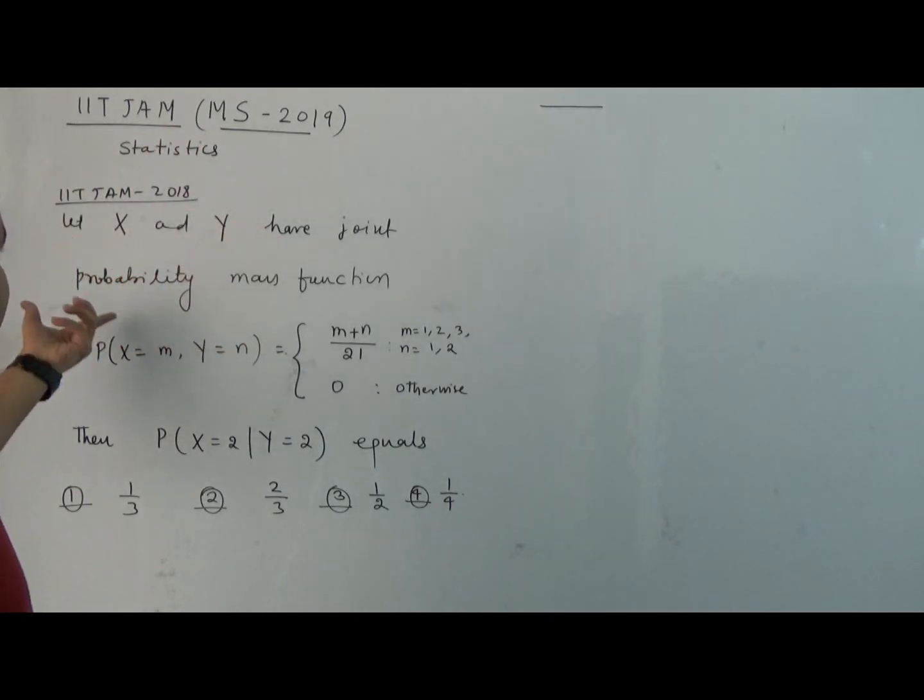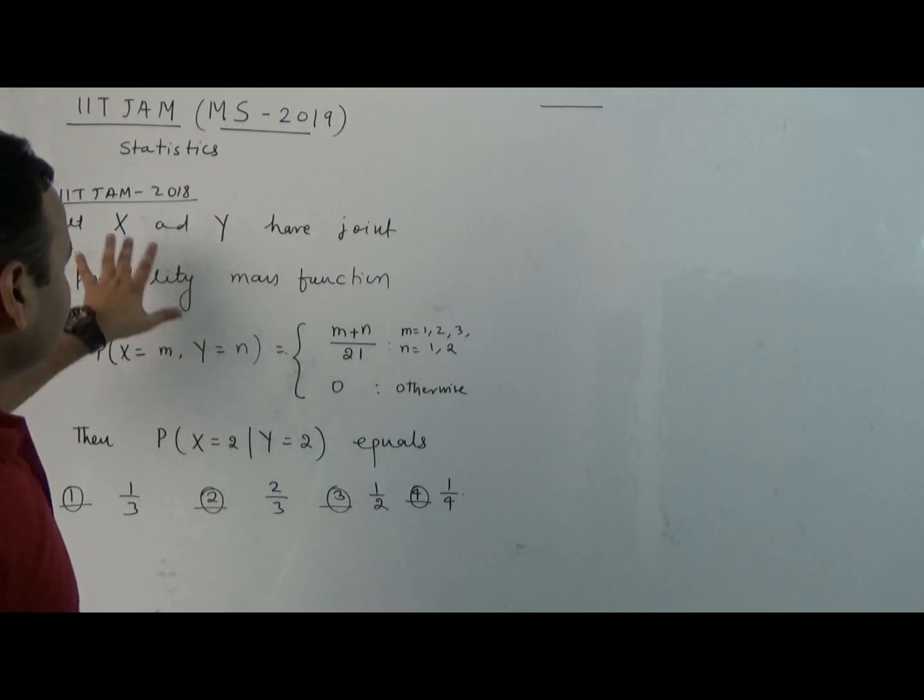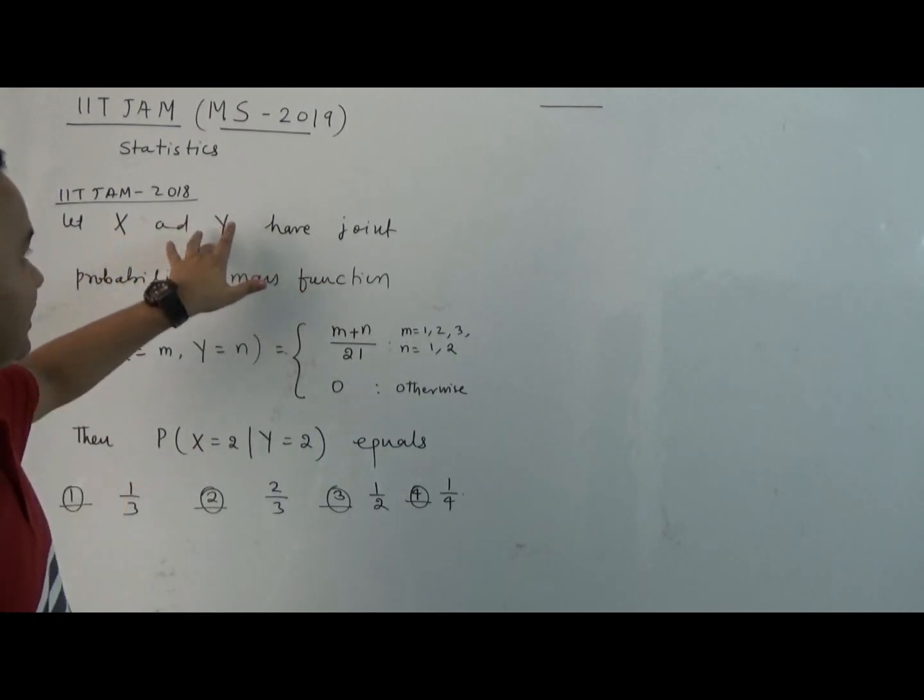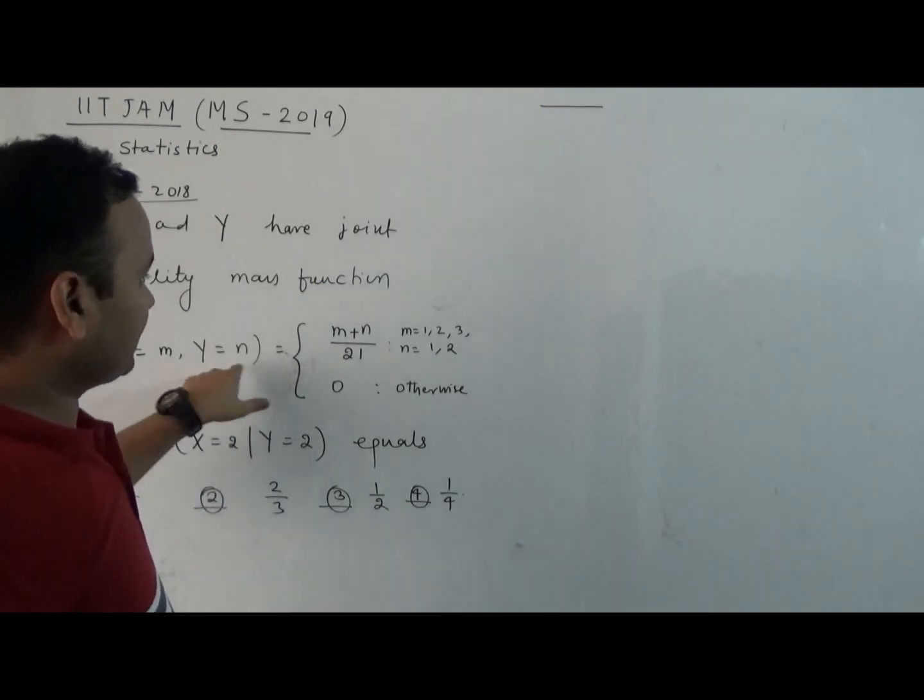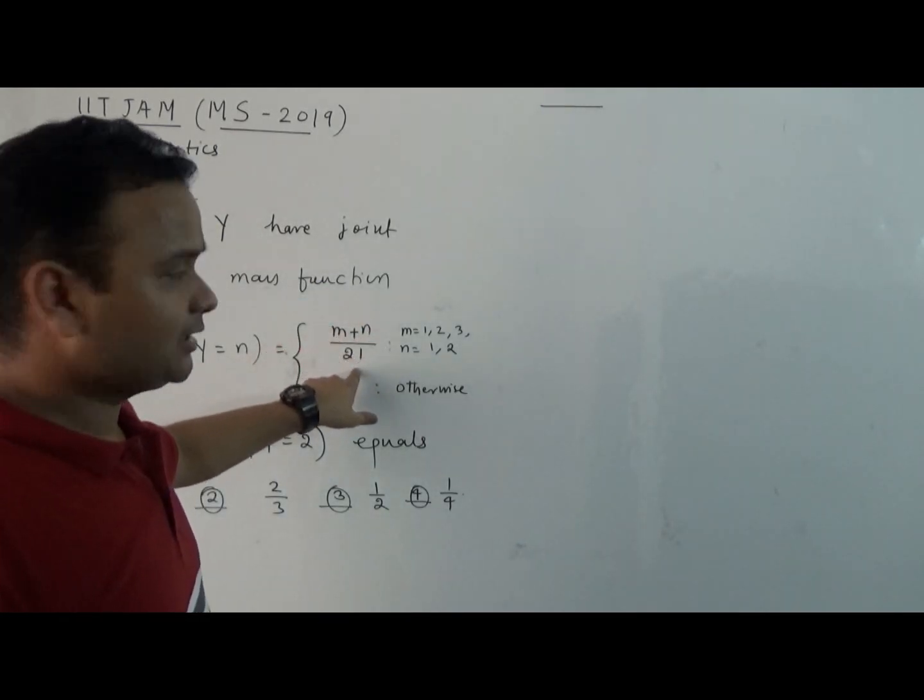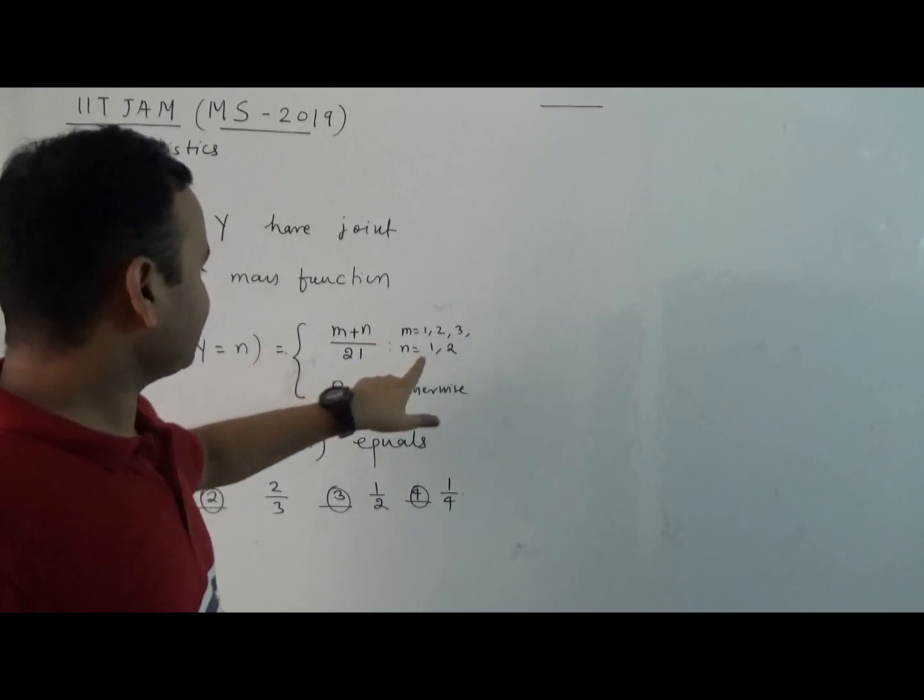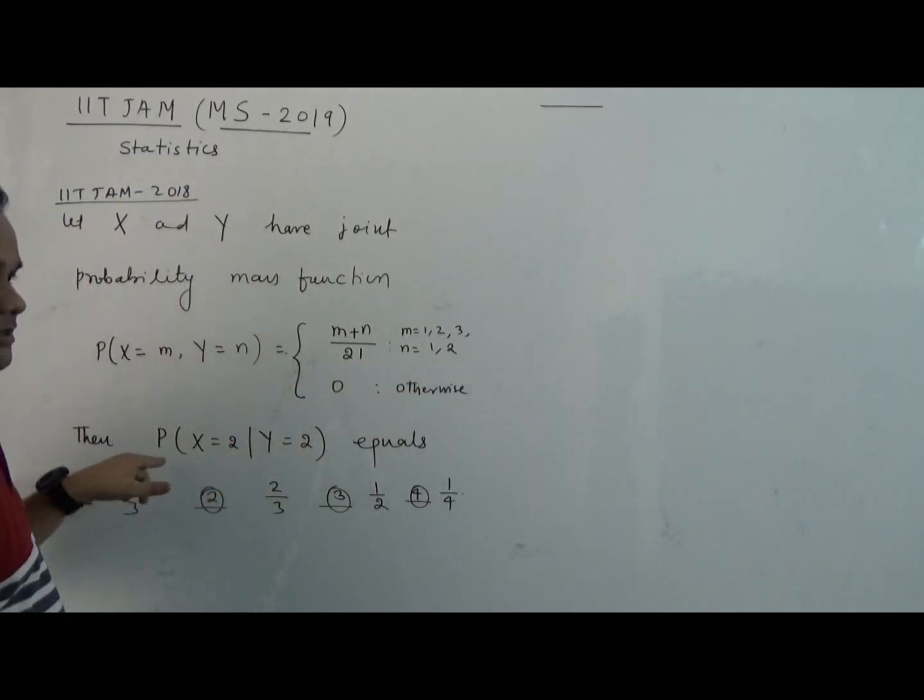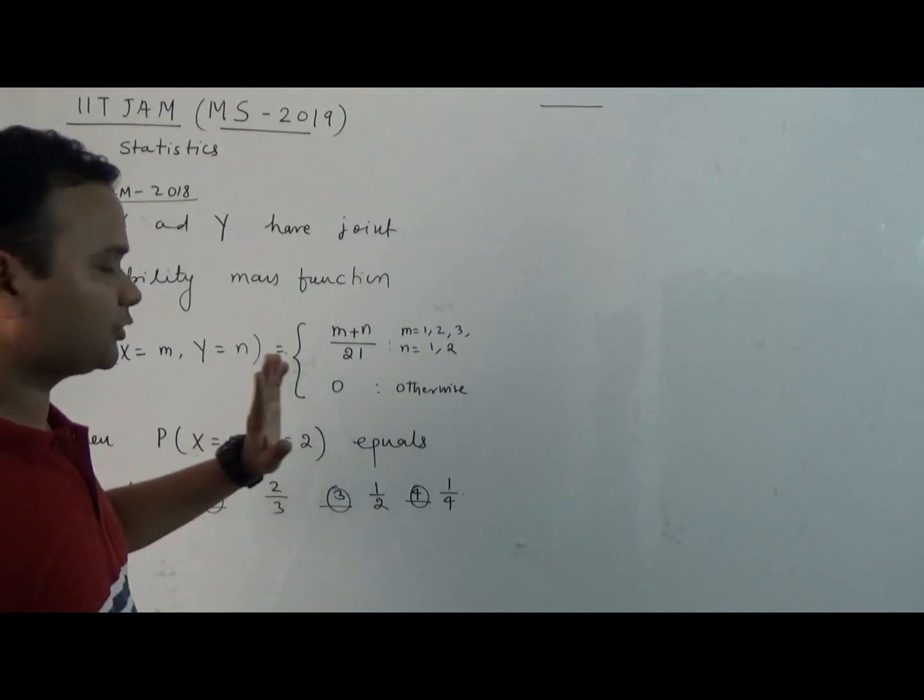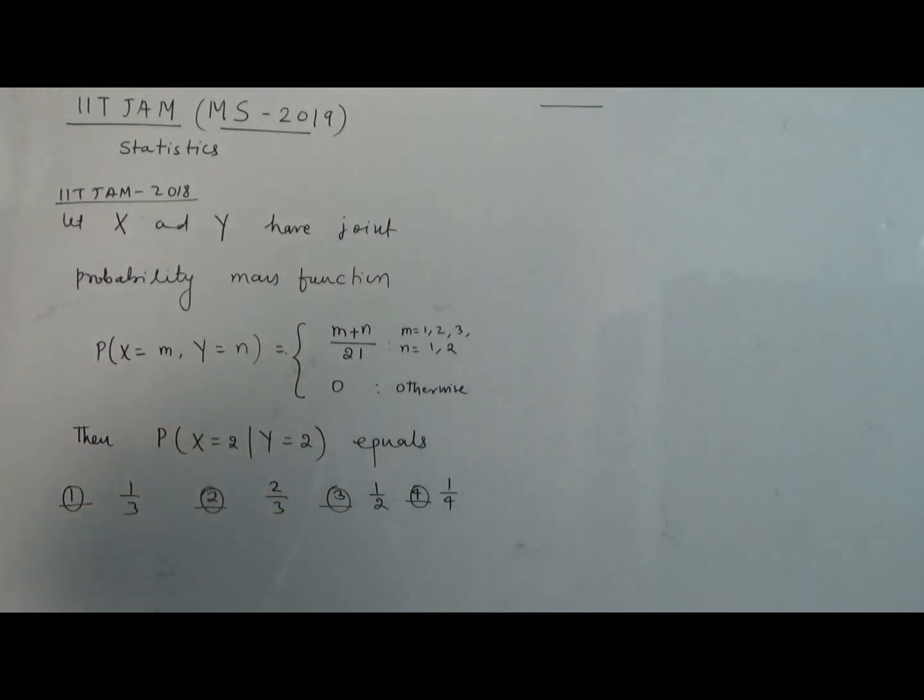What is the question? If X and Y have joint probability mass function, probability of X equal to M and Y equal to N is M plus N by 21, when M is 1, 2, 3 and N is 1, 2, 3, and equal to 0 otherwise, then find this conditional probability: probability of X equal to 2 given Y equal to 2.